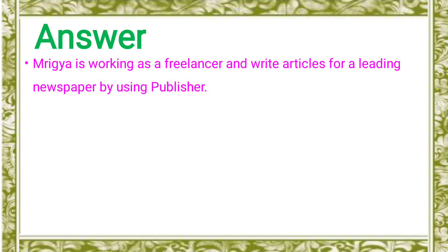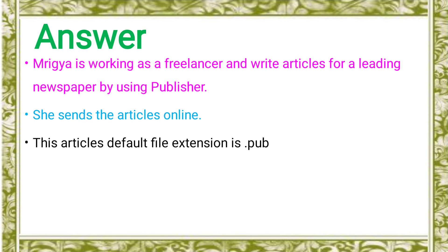Mrigiya is working as a freelancer and writes articles for the leading newspaper by using Publisher. She sends the articles online. The publisher is used. So the article's default file extension is .pub — that means the first three letters of Publisher. This is the extension: .pub.